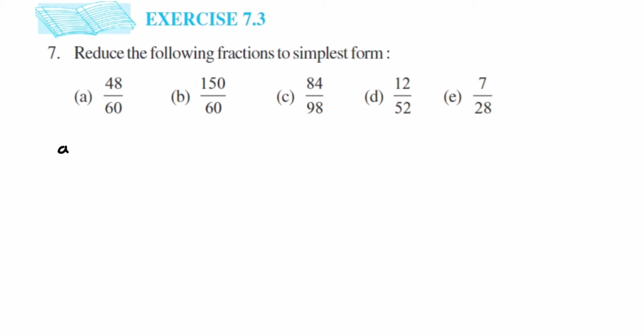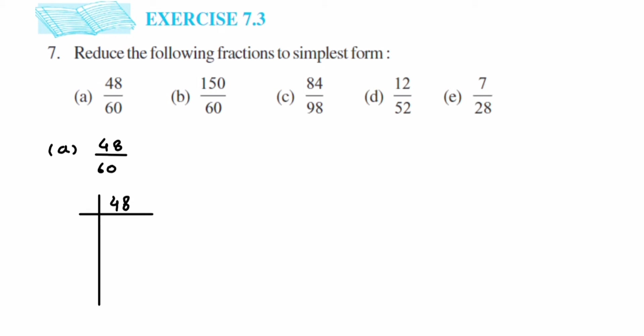The first one is 48 by 60. To solve this, you can go by the cancellation method — that is one way of doing it. For those who don't know the cancellation method, I'm going to show you how to solve this using prime factorization of both the numerator and denominator, and then cancel the common factors.